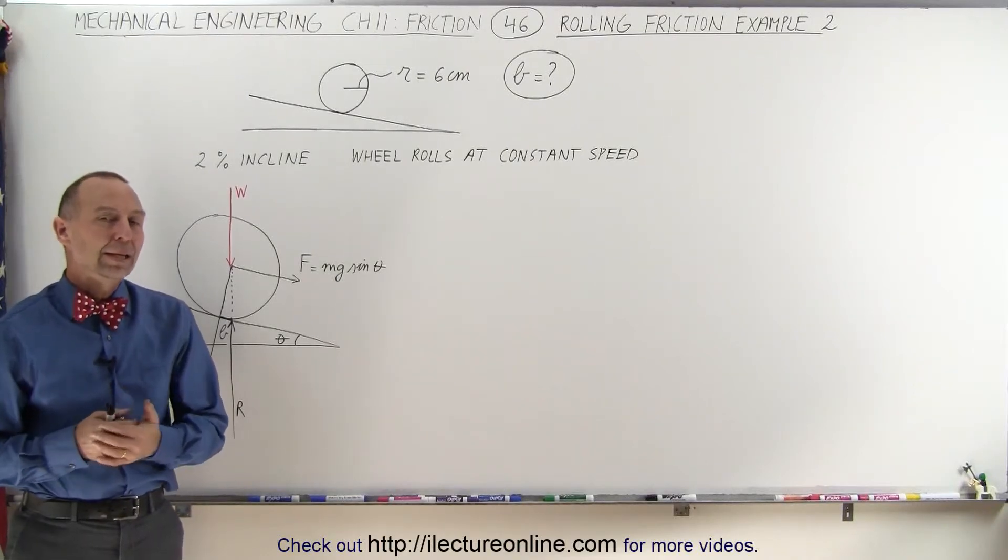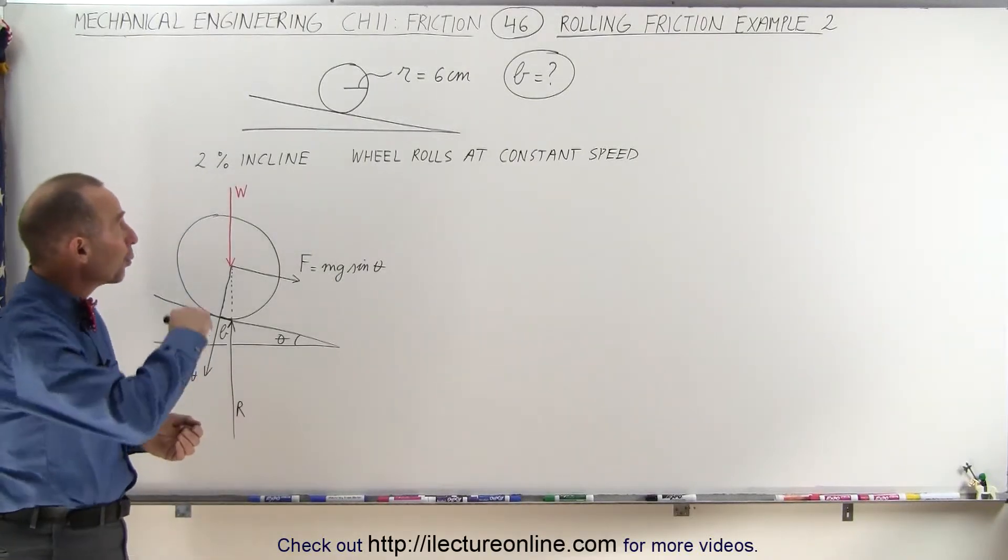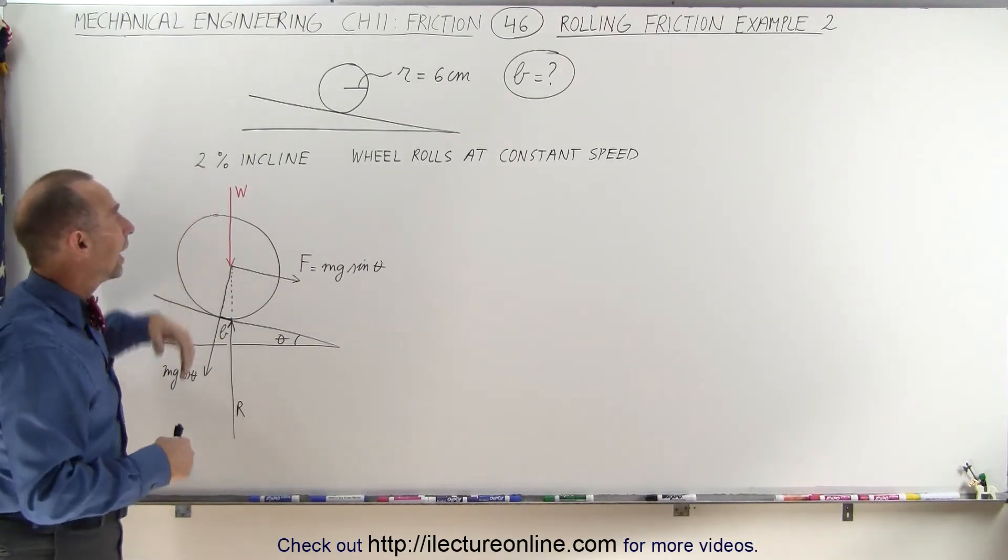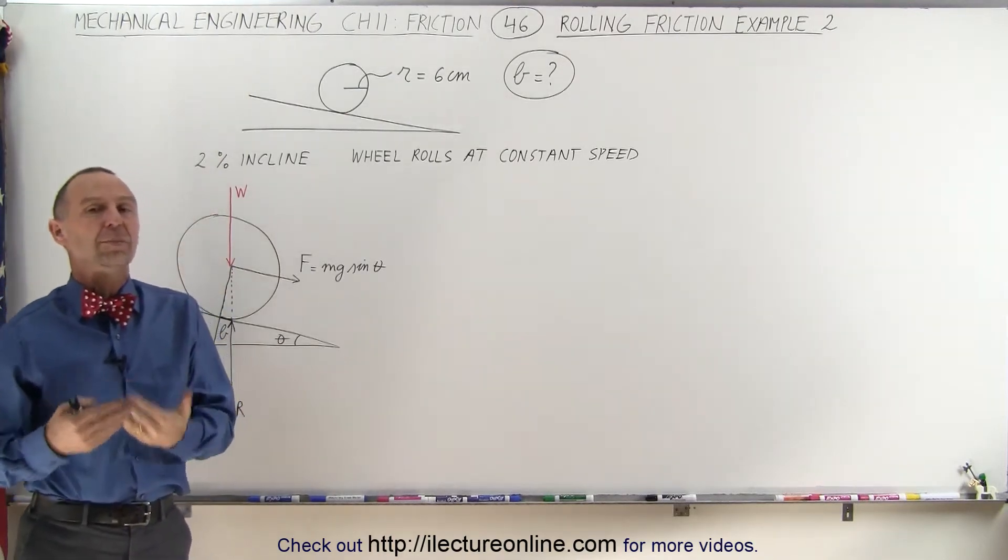Welcome to Electroline. Here we have a problem where we have a wheel that's rolling down an incline. It is a 2% incline and the wheel rolls at a constant speed.